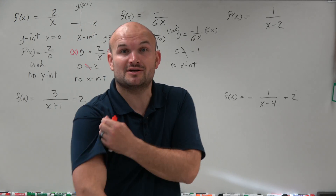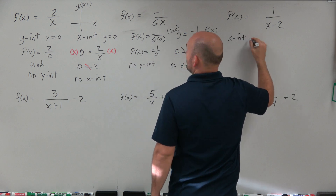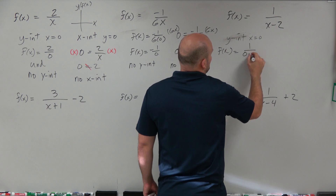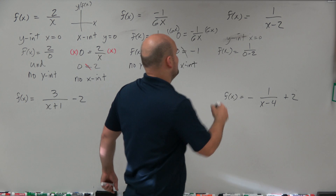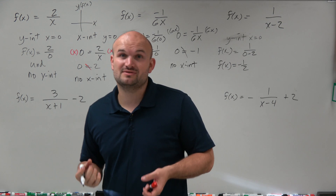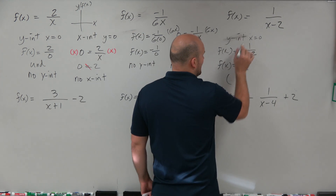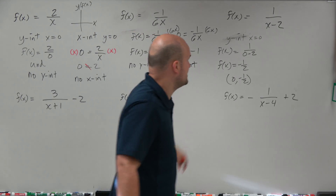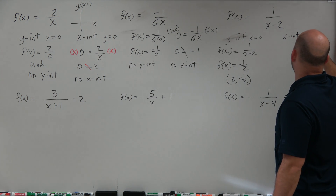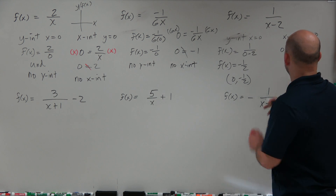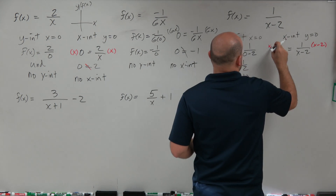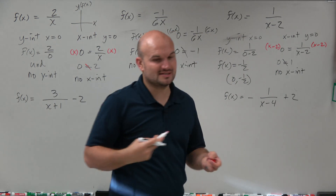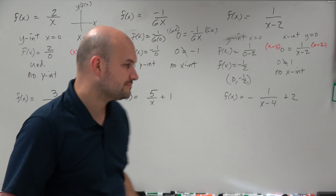However, for the last four problems, we are going to have some x and y-intercepts, so it's important to test them out. For the y-intercept, x equals 0: f of x equals 1 over (0 minus 2), which is negative 2. So f of x equals negative 1 half. Since x equals 0 and f of x equals negative 1 half, the y-intercept is (0, -1/2). For the x-intercept, y equals 0: 0 equals 1 over (x minus 2). Multiplying both sides gives 0 equals 1, which is undefined — so there is no x-intercept.